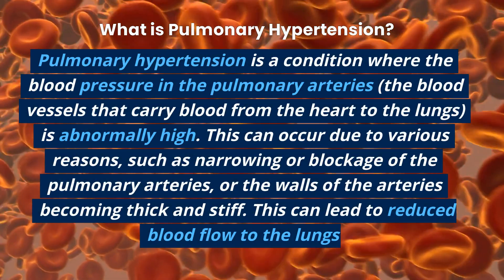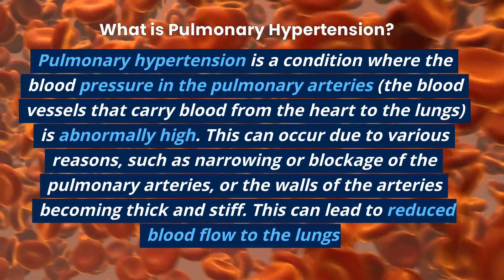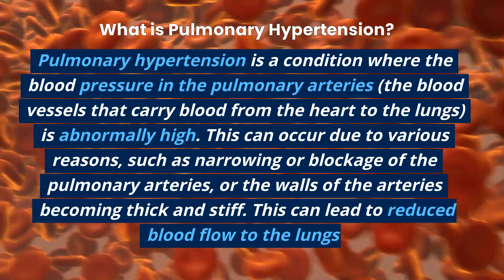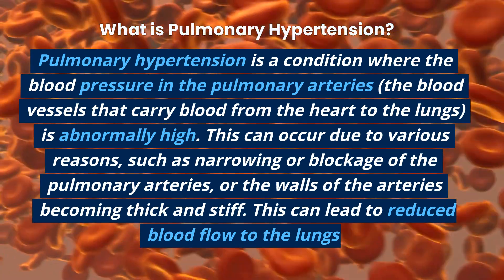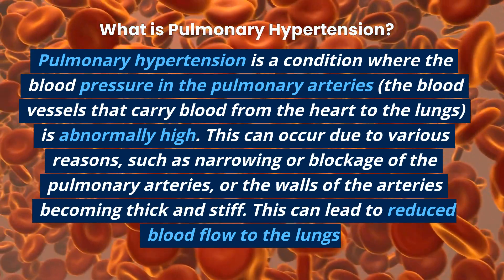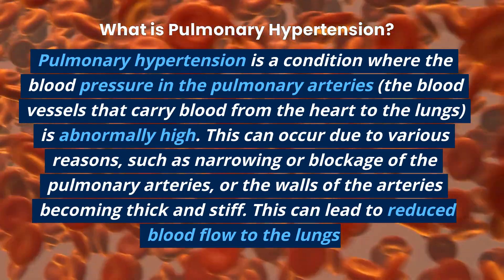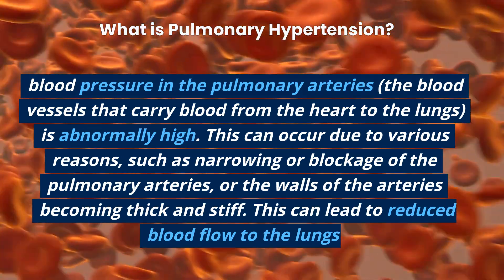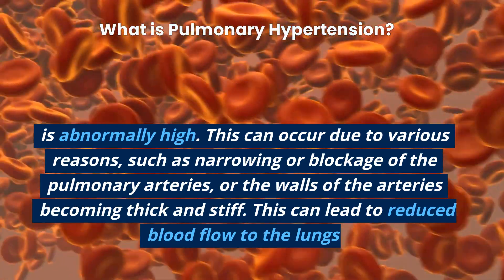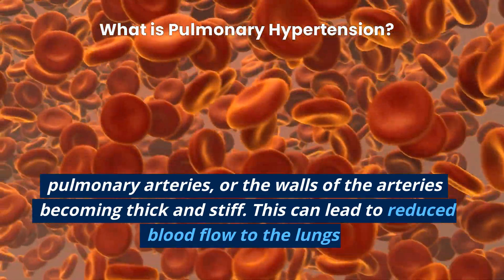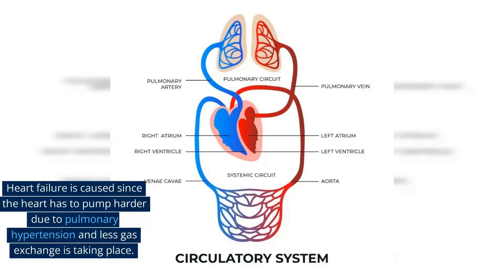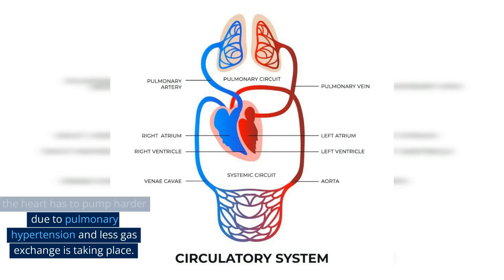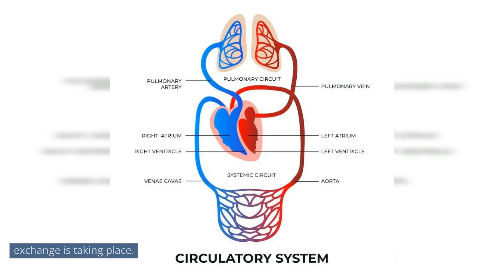Pulmonary hypertension is a condition where the blood pressure in the pulmonary arteries — the blood vessels that carry blood from the heart to the lungs — is abnormally high. This can occur due to various reasons, such as narrowing or blockage of the pulmonary arteries, or the walls of the arteries becoming thick and stiff, leading to reduced blood flow to the lungs. Heart failure is caused since the heart has to pump harder due to pulmonary hypertension and less gas exchange is taking place.